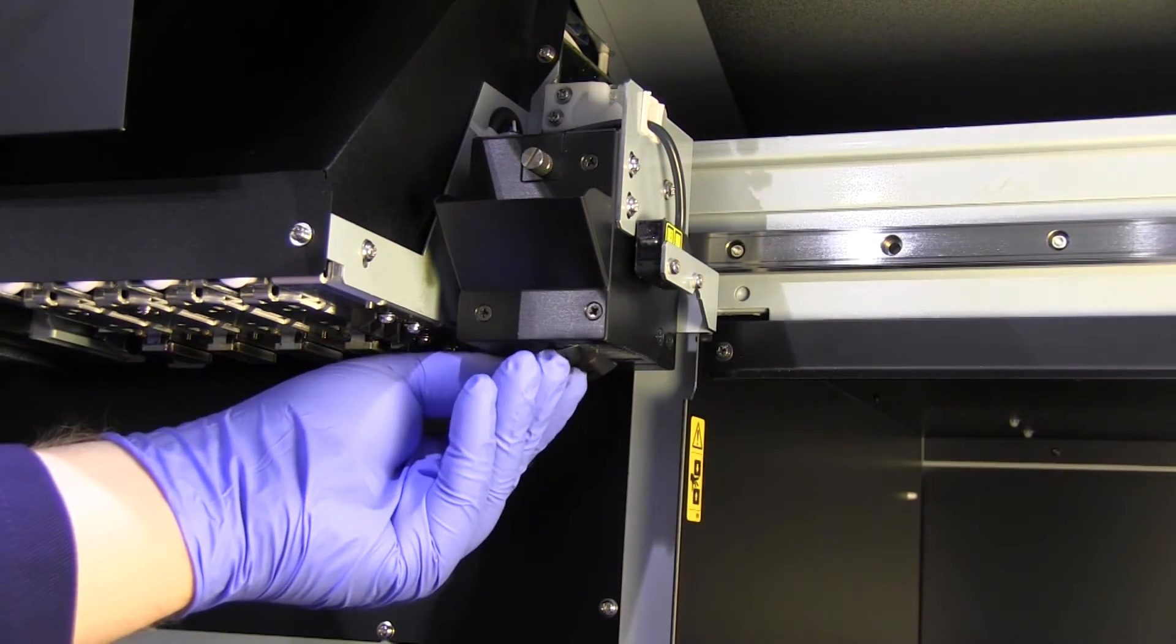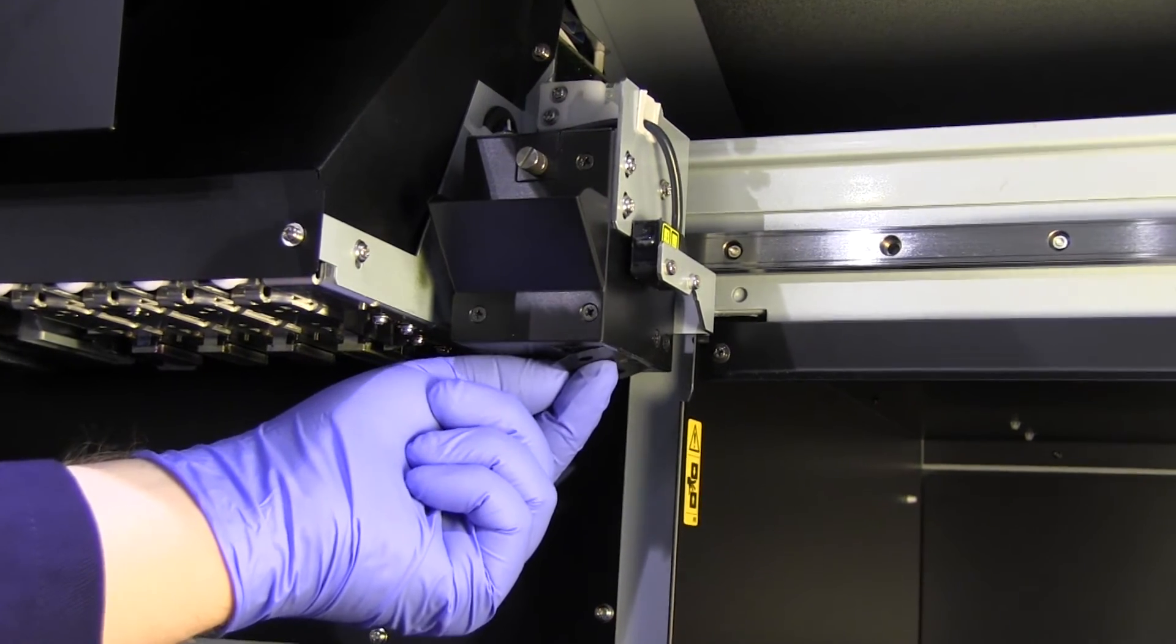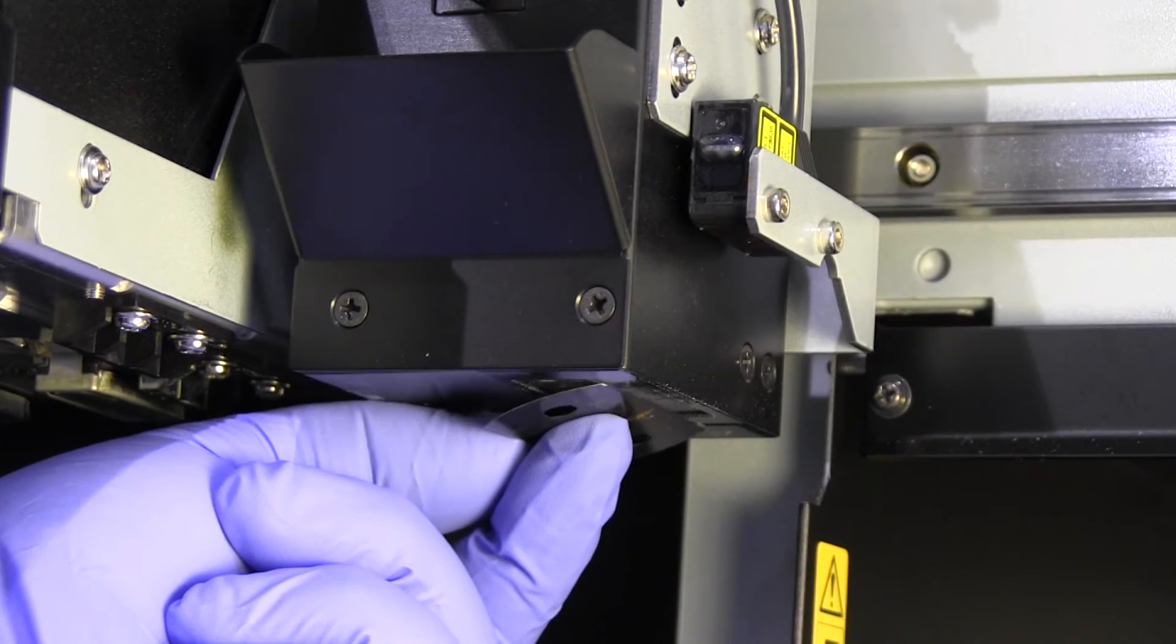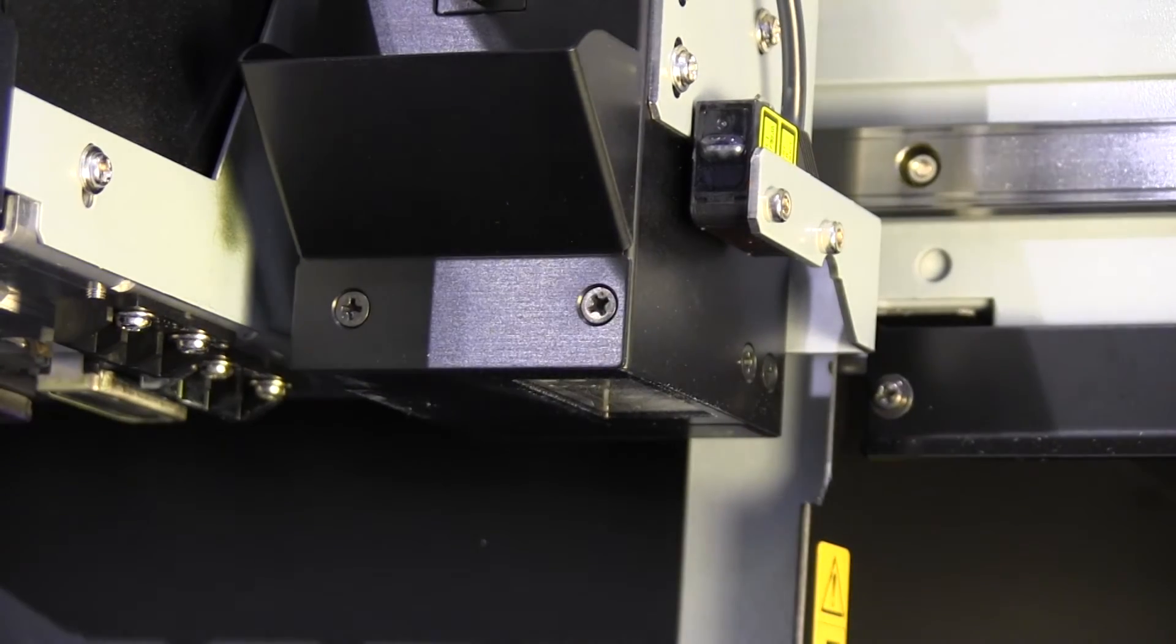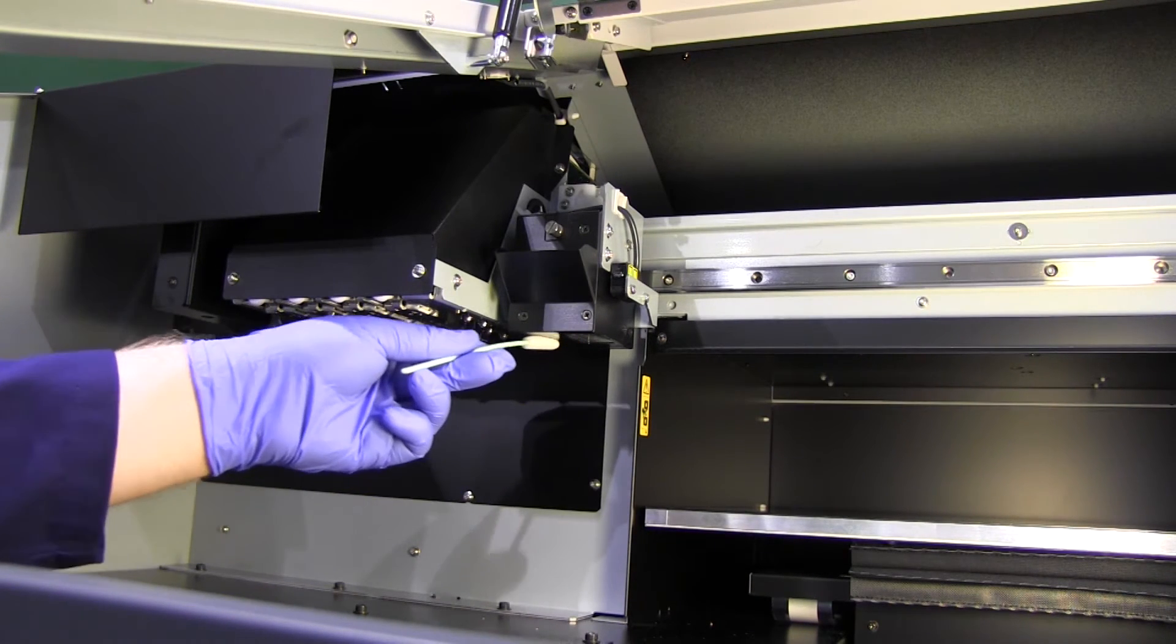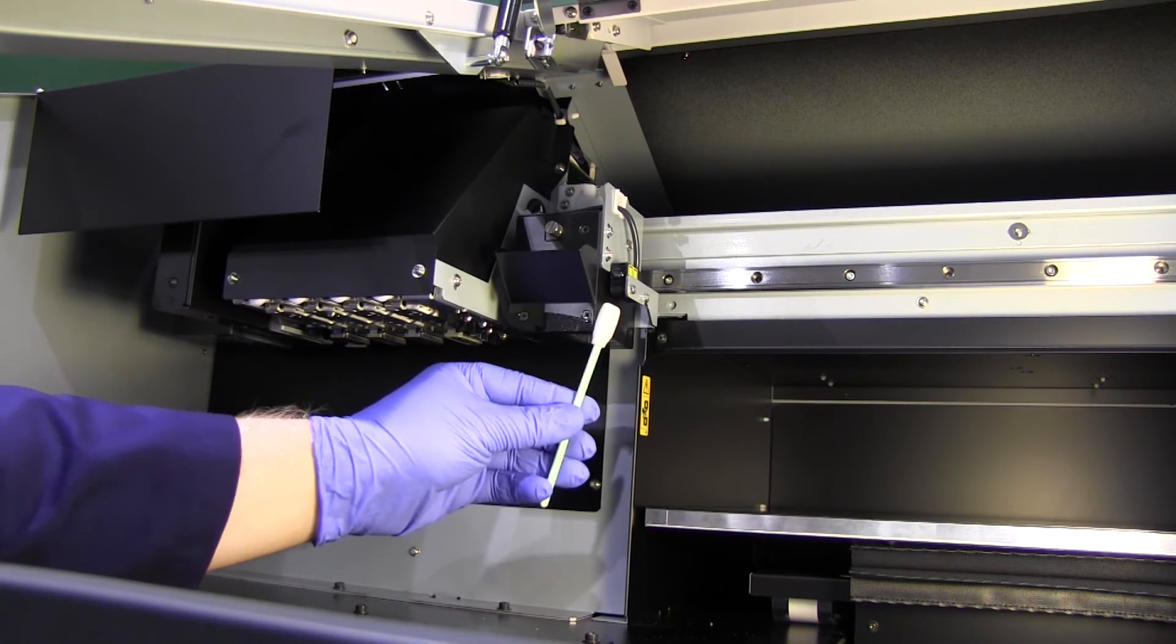The surface of the lamp lens can over time get a film of cured ink settling on it. Use a straight blade edge or similar to carefully scrape the ink off but be sure to use only the flat edge and not the sharp point of the blade so as not to damage the surface. Isopropanol can be used to clean the lamp casing if needed.